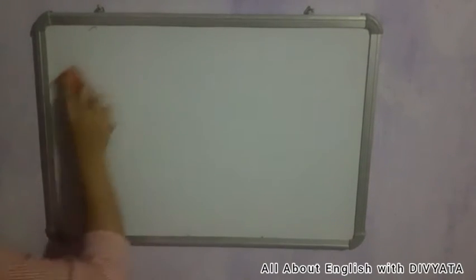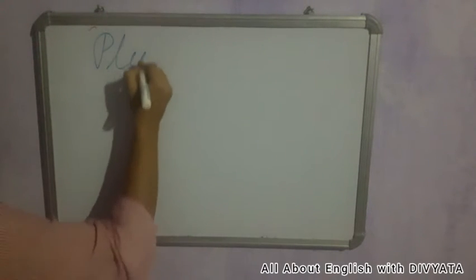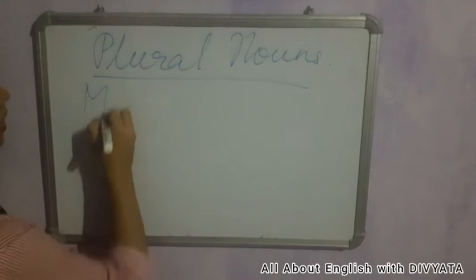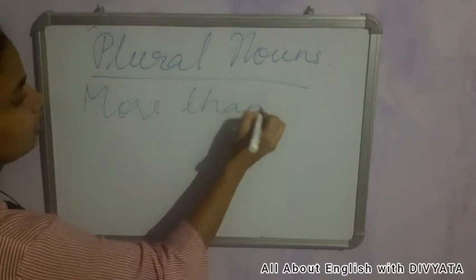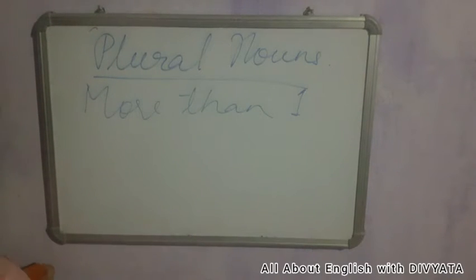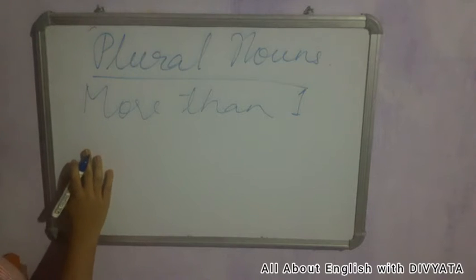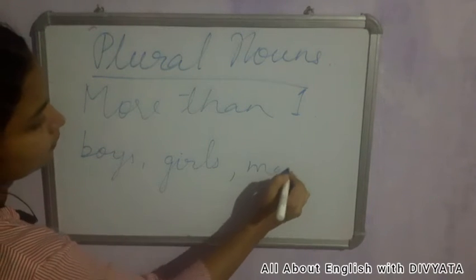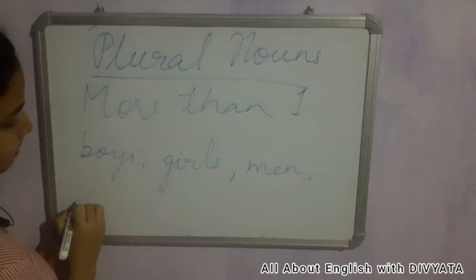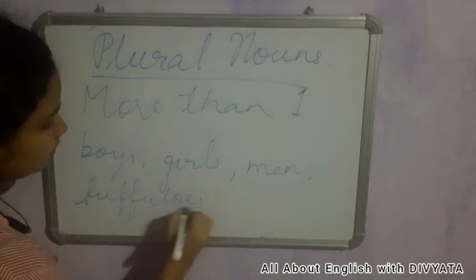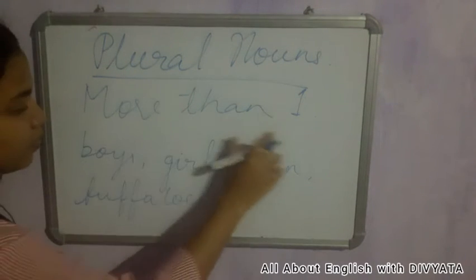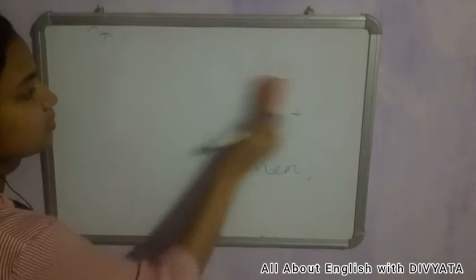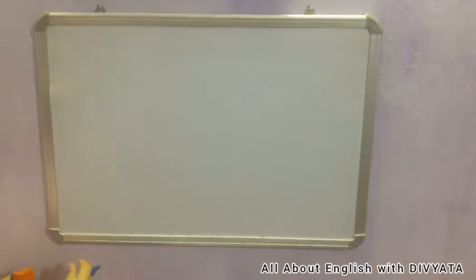Plural nouns mean more than one. It can be two, three, four, five, a hundred, a thousand — any number, but always more than one. Examples: boys, girls, men, buffaloes, and so on. So singular means one, and plural means more than one.